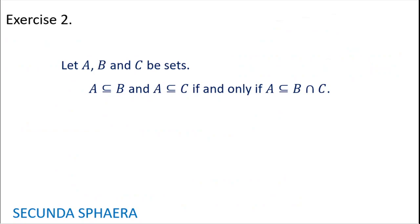Moving on to the second exercise: let A, B, and C be sets. A is contained in B and A is contained in C if and only if A is contained in B∩C. This is analogous to the first exercise, but with intersection instead of union.